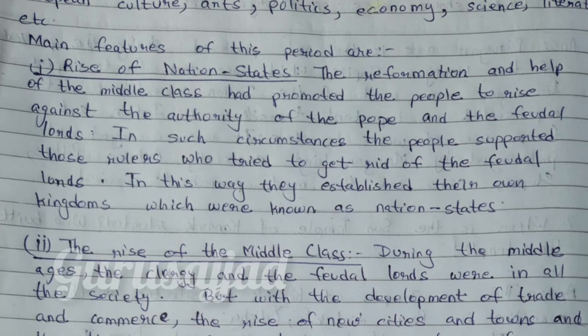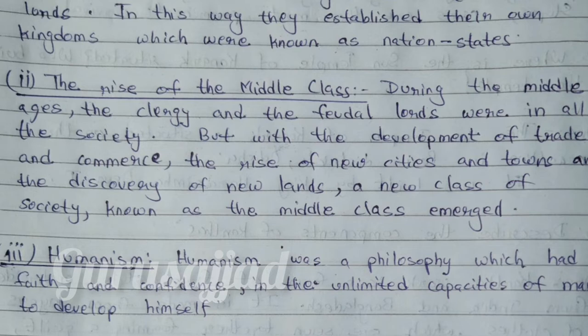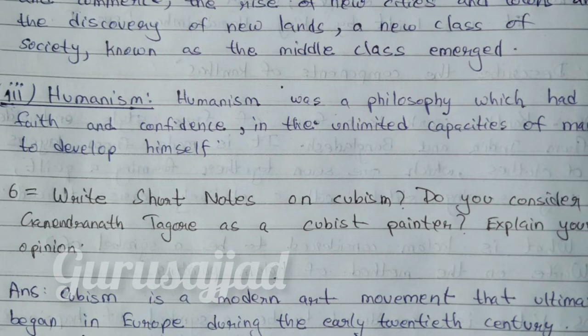Point 2 — The Rise of the Middle Class. During the Middle Ages, the clergy and the feudal lords dominated all of society. But with the development of trade and commerce, the rise of new cities and towns, and the discovery of new lands, a new class known as the Middle Class emerged. Point 3 — Humanism. Humanism was a philosophy which had faith and confidence in the unlimited capacities of man to develop himself.